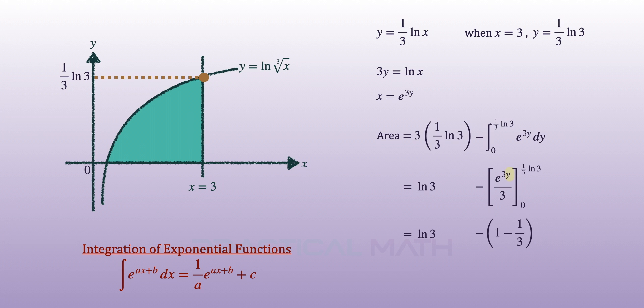Replacing y to be a one-third ln 3 will give us 1. Similarly, substituting y to be a 0 will give a result of one-third.